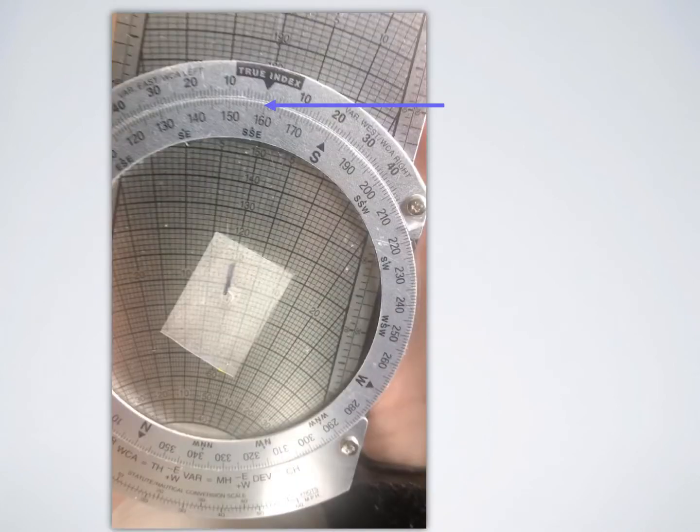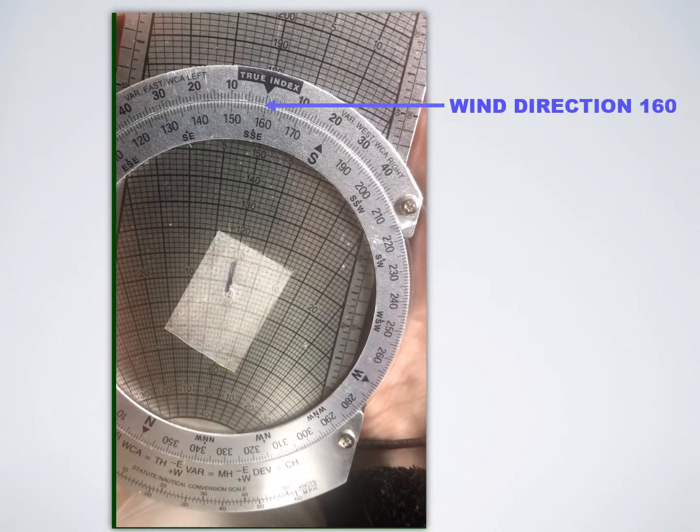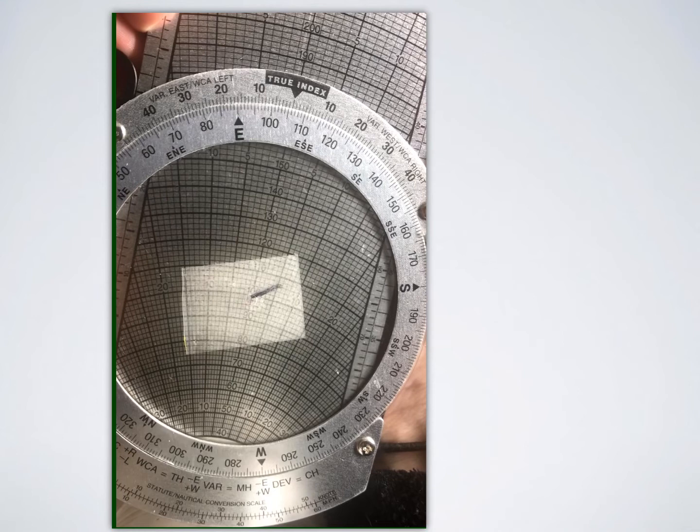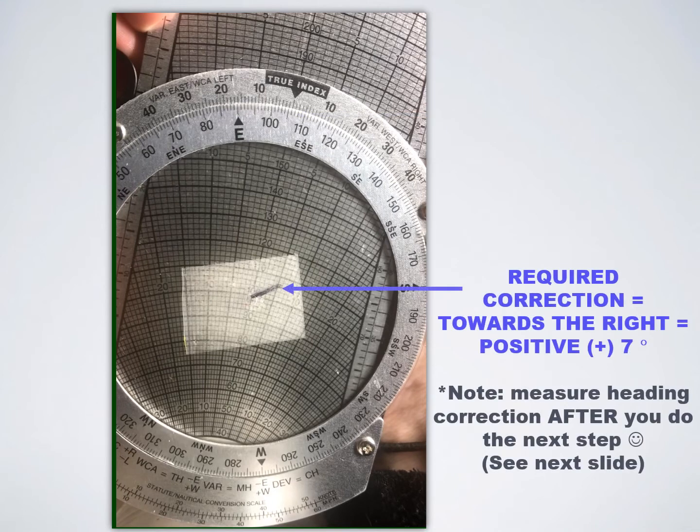So for example here we have a wind direction of 160 and my desired track is 106, and so my correction would be to the right and it is going to be a correction of 7 degrees.